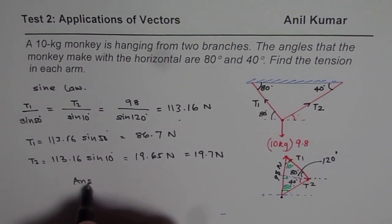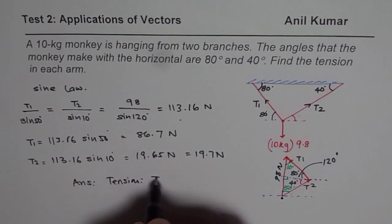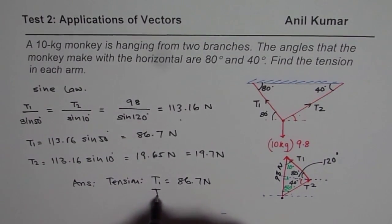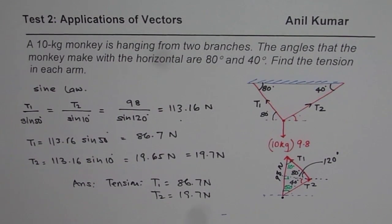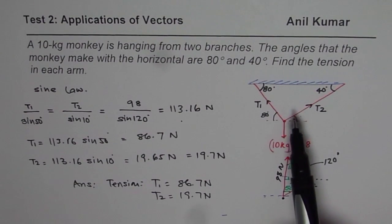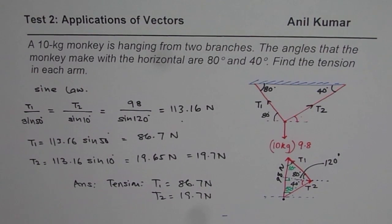So that is the tension in the two arms. Now we can write down our answer. The tension is T1 is 86.7 newtons and T2 is 19.7 newtons. I hope with this you understand very clearly how to sketch the force diagram, from there how to sketch the vector diagram and then apply the sine law to solve such questions related to tension.